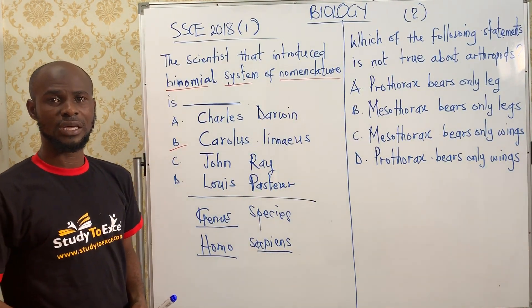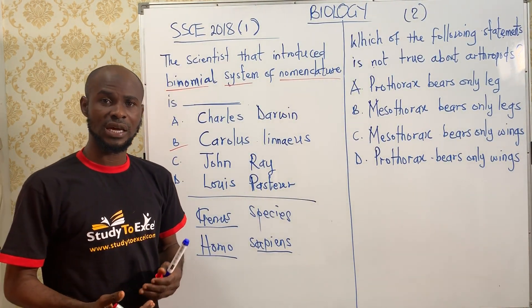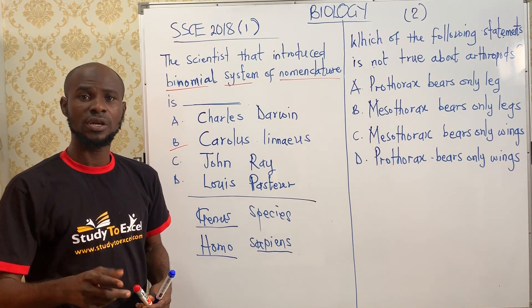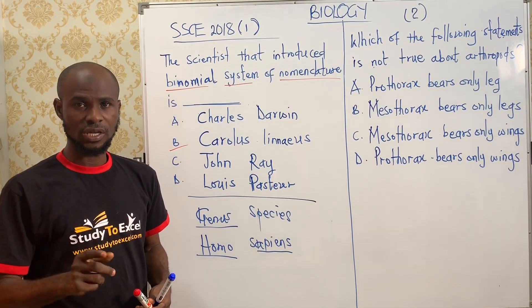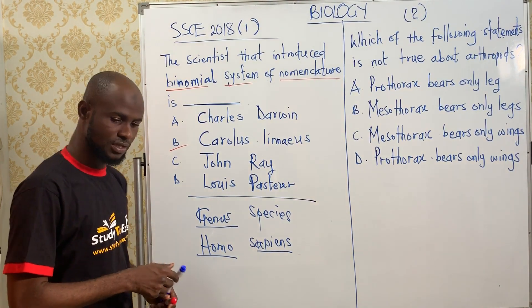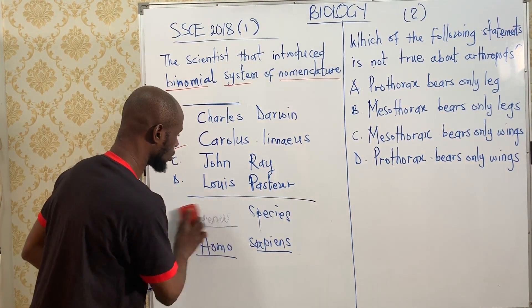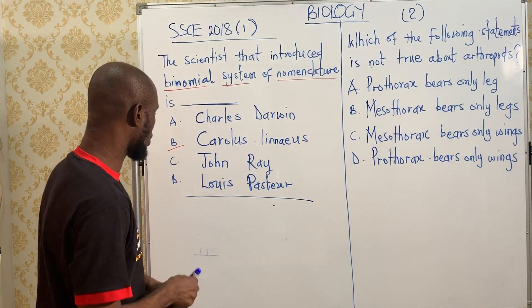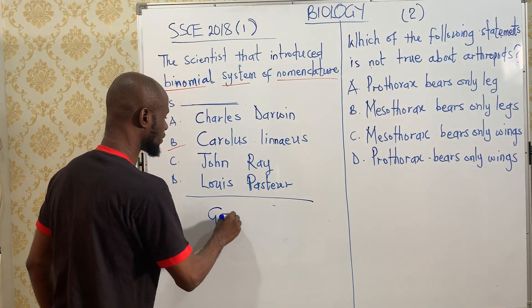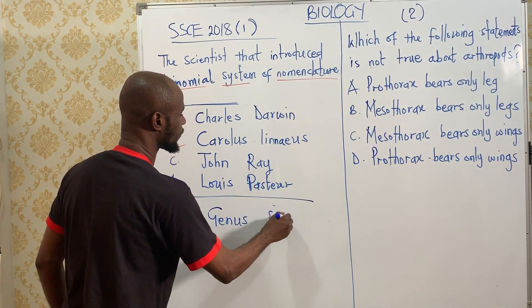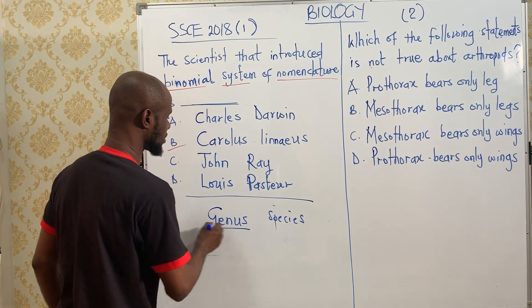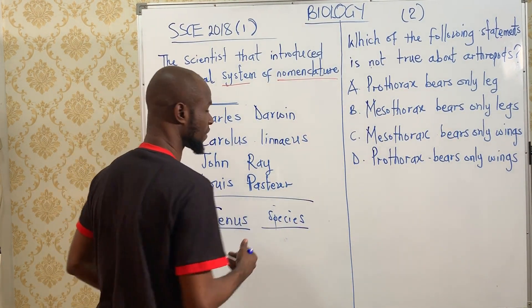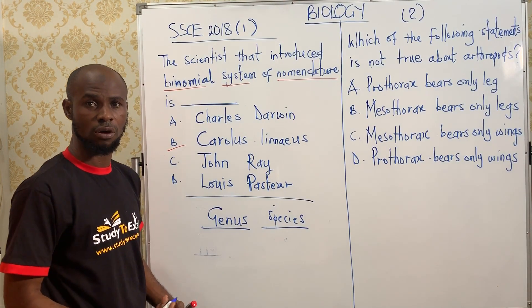The binomial system of nomenclature is the giving of two names to an organism. The first name is called the genus, while the second name is called the species. Genus is a generic name while the species is a specific name for that particular organism.